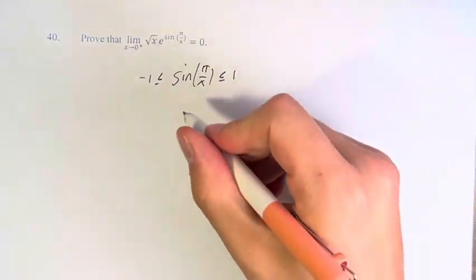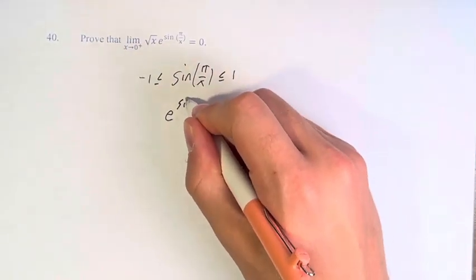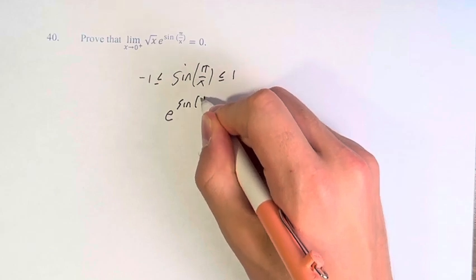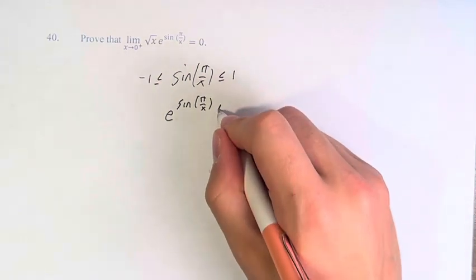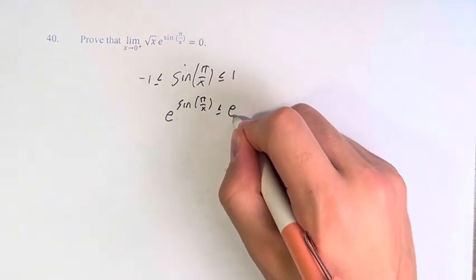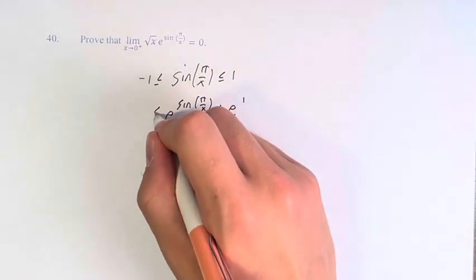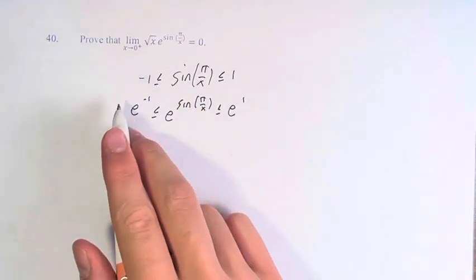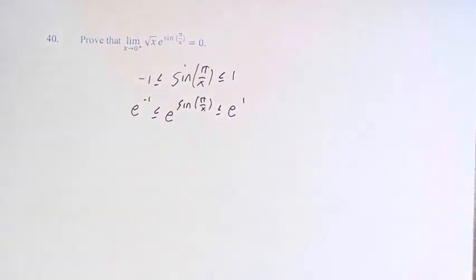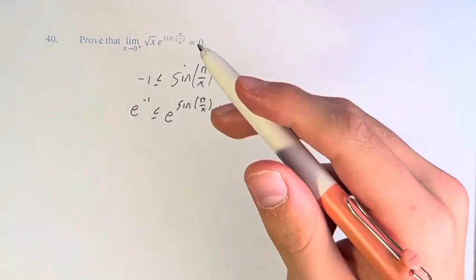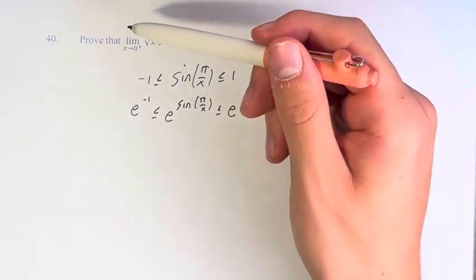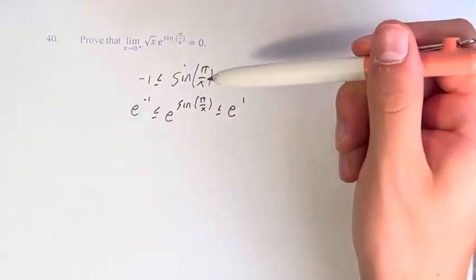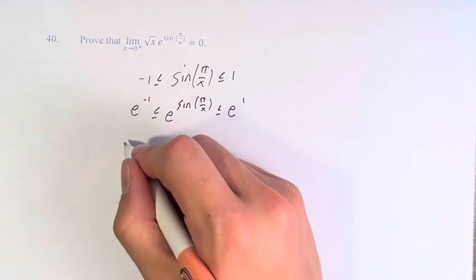Therefore, we can say that e to the sine of pi over x is less than or equal to e to the 1 and greater than or equal to e to the negative 1. We have this inequality, and we can raise everything to e. Therefore, we are getting one step closer to this function and we just have to multiply by the square root of x.